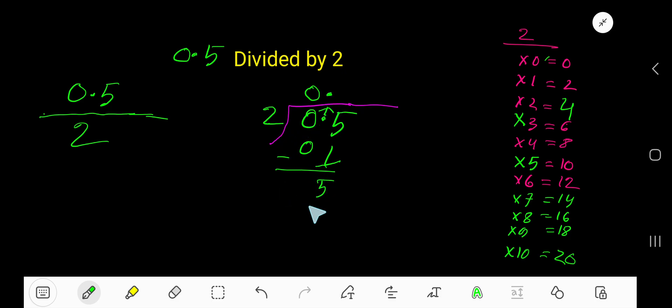2 goes into 5 how many times? 3 times 6, so 2 times 4. Write 2. 2 times 2 is 4. Subtract: 1.